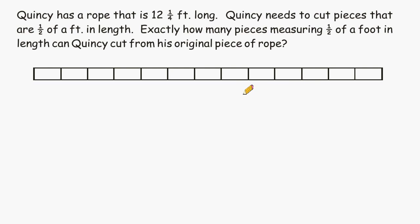The problem wants us to figure out how many pieces that measure exactly half of a foot can we cut from the rope that is twelve and one-quarter feet in length. So what we are going to do next is take each whole and cut those into halves.